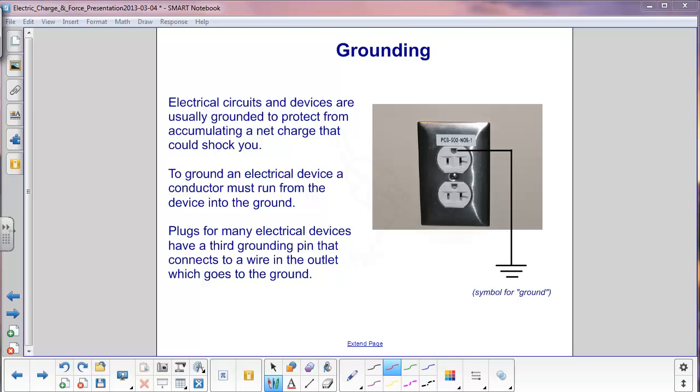However, in the house, we use objects that draw quite a bit of current and have a lot of electric charge that, if there are frayed wires or a defect in the equipment, could build up a large charge so that if you were to touch it, it would flow through you and cause great damage. So circuits and devices are usually grounded to protect them from accumulating that net charge that could shock you.